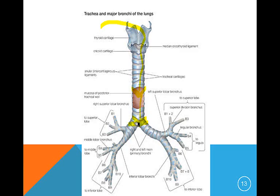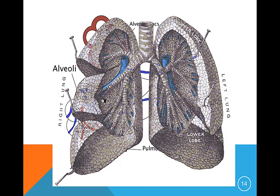Then the air moves to the main stem bronchus, secondary, tertiary, and so forth. Here's the right bronchus labeled and the left bronchus — this is kind of like a dissected view of the lungs.